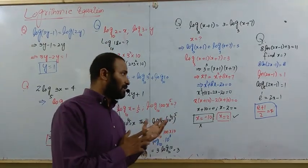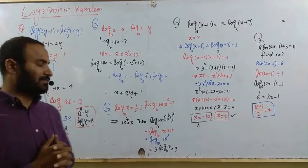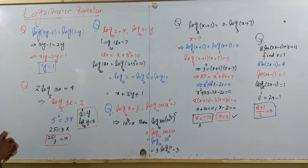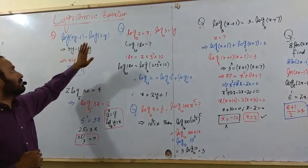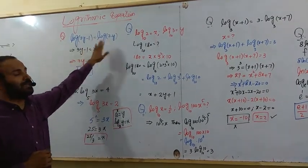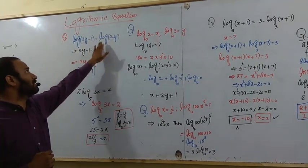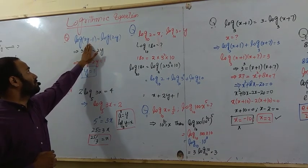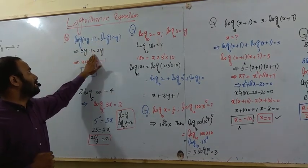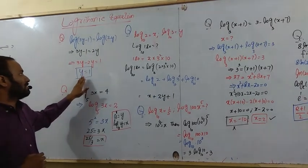I have tried to take those questions which are in the maximum universities' papers. First of all, log(3-1) equals log(2y). You can see that the base is not given. If the base is not given, then you consider the same base. And there is no definition of equal logarithm. So 3-1 equals 2y. If you simplify the equation, then you will get the value of y.